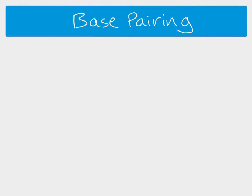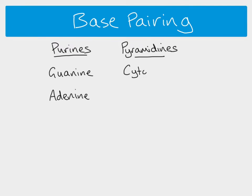Let's think about base pairing. The nitrogenous bases are able to pair up with one another — we have what we call complementary base pairing. There are two groups: the purines, which include guanine and adenine, and the pyrimidines, which include cytosine, thymine, and uracil. These four bases are found in DNA. RNA is the same, but RNA does not have thymine — RNA has uracil instead. So RNA has guanine, cytosine, adenine, and uracil, while DNA has guanine, cytosine, adenine, and thymine.